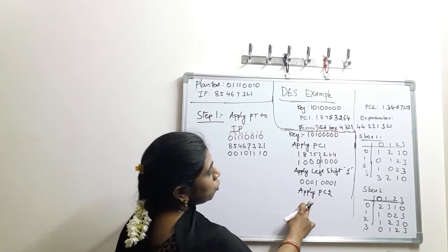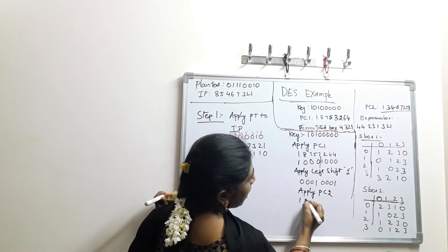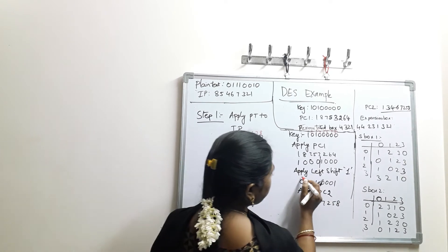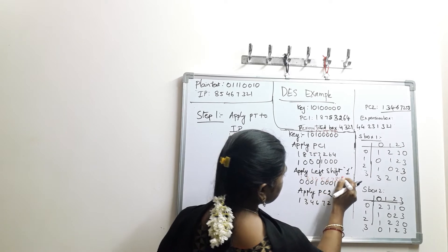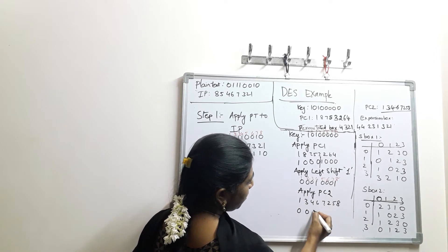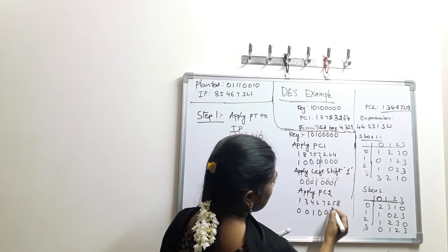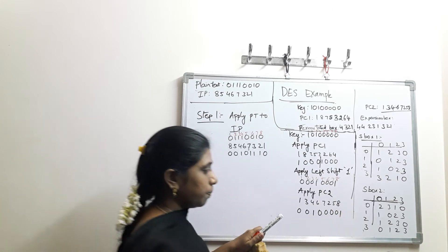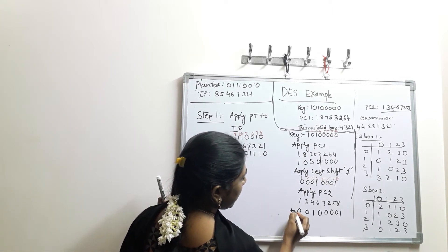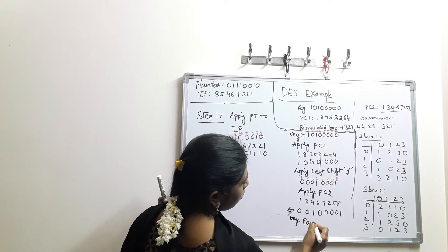The Permuted Choice 2 values are 1, 3, 4, 6, 7, 2, 5, 8. Applying PC-2: 1st bit is 0, 3rd bit is 0, 4th bit is 1, 6th bit is 0, 7th bit is 0, 2nd bit is 0, 5th bit is 0, and 8th bit is 1. Once you have the PC-2 output, this bit sequence is used as the key value for the round function.